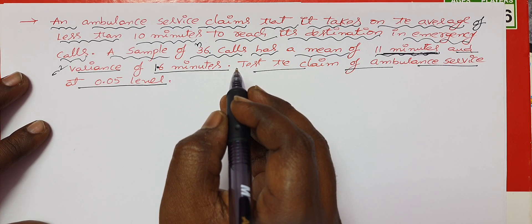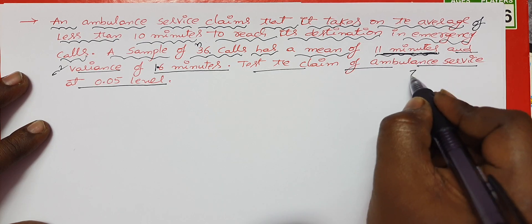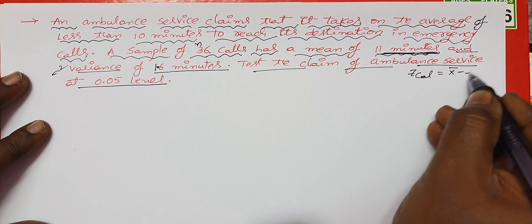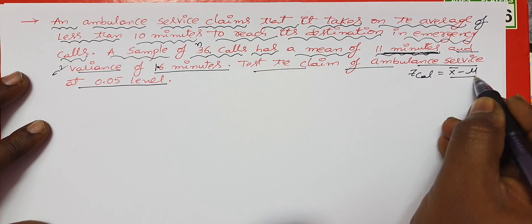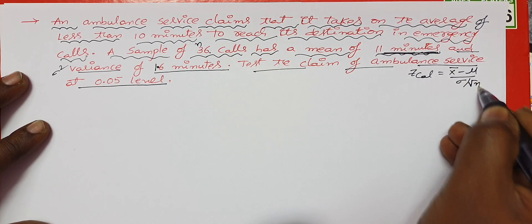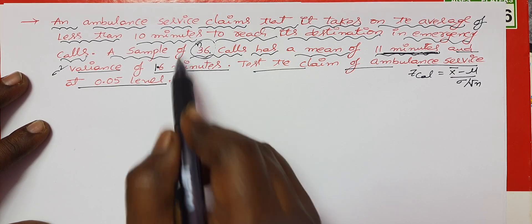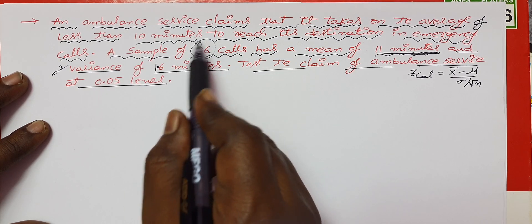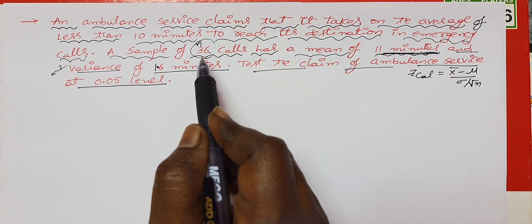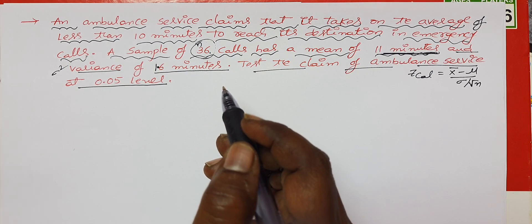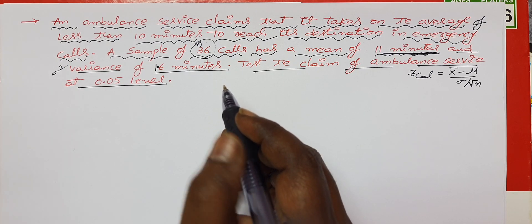This is a test of significance for a single mean. The calculated value uses Z = (x̄ − μ) / (σ / √n), which uses the Z distribution table. If the sample size is between 12 and 20, it is a small sample and you use the T distribution table.